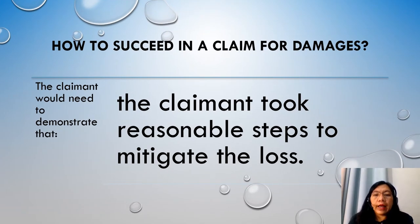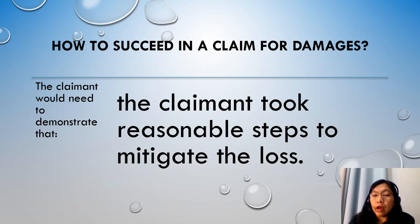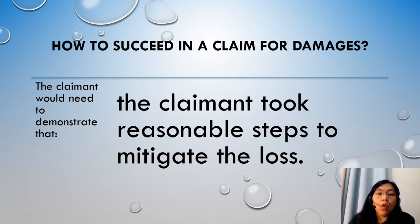Third, the claimant must take reasonable steps to mitigate the loss — there is a requirement for mitigation. Even where causation and remoteness have been established in relation to loss, any recoverable damages can be affected if the claimant has failed to mitigate their loss. Mitigation in law is the principle that a party who has suffered loss from a breach of contract has to take reasonable action to minimize the amount of that loss. An injured party cannot recover damages for any loss, even if caused by a breach of contract, which could have been avoided by taking reasonable steps.